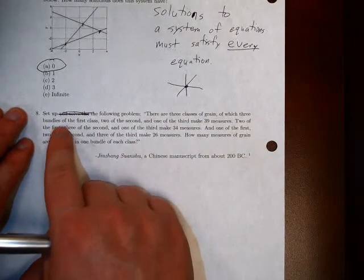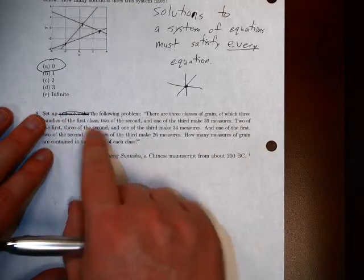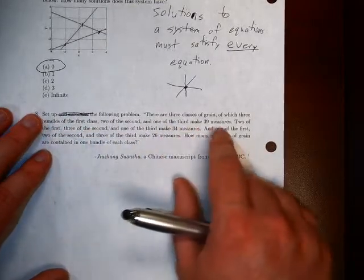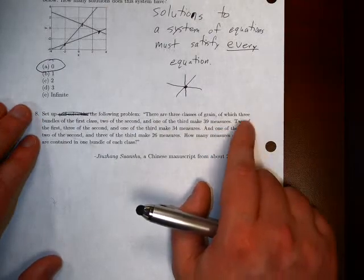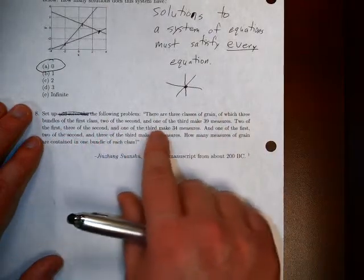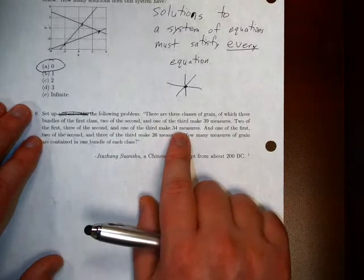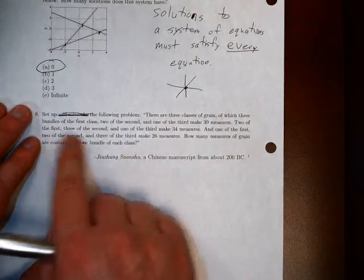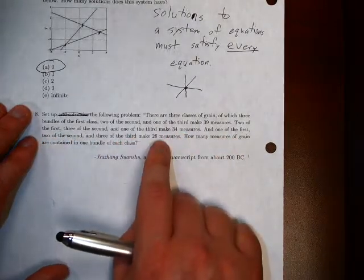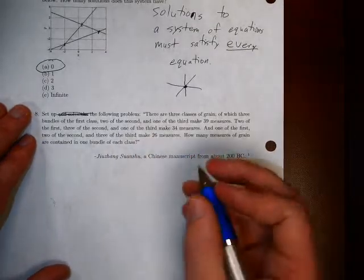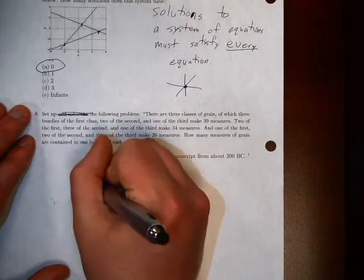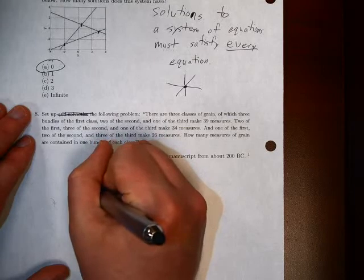So there's going to be three classes of grain. One in which three bundles of the first, two of the second, and one of the third makes 39 measures. Two of the first, three of the second, and one of the third makes 34. And one of the first, two of the second, and three of the third makes 26. What we're going to do here is we're going to go ahead and create some variables for ourselves. X, Y, and Z.